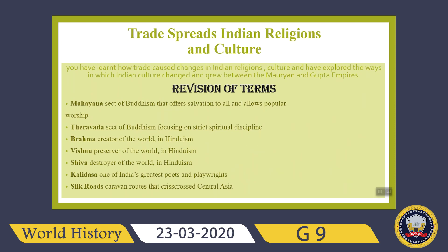We also discussed how trade spread Indian religions and culture. In this lesson, you learned how trade caused changes in Indian religions and culture, and explored the ways Indian culture changed and grew between the Mauryan and Gupta Empires. The main terms here are Mahayana — a sect of Buddhism — and Theravada, also a sect of Buddhism. Mahayana offers salvation to all and allows popular worship, while Theravada focuses on strict spiritual discipline.